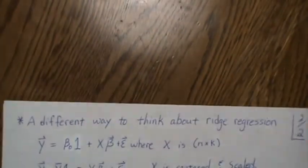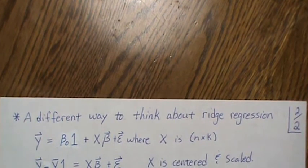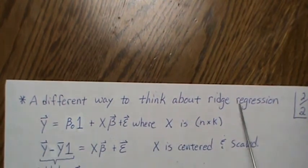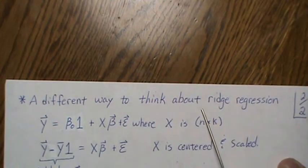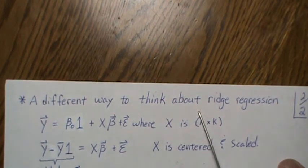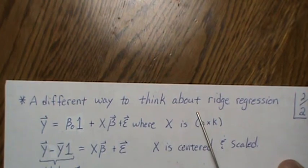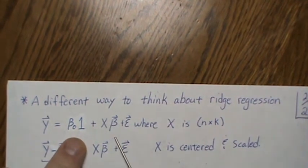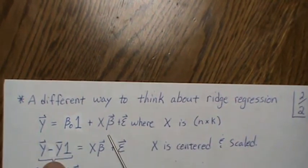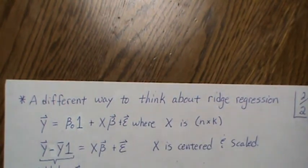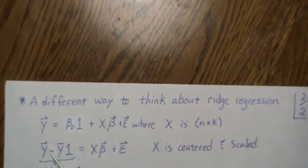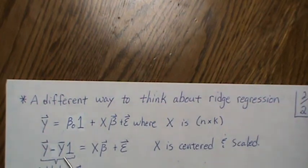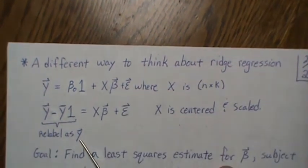So now let's derive this from scratch, and I'm also going to point out how you would change this to create lasso regression. A different way to think about ridge regression: here's our model, and we subtract that beta to the other side. Since we're dealing with the centered and scaled model, it's Y bar, so we're subtracting Y bar from each of those, and we're left with X beta and epsilon. Instead of calling this Y star, I'm just going to call it Y.